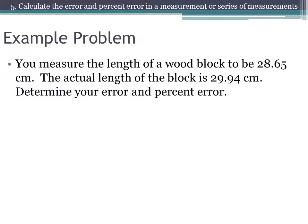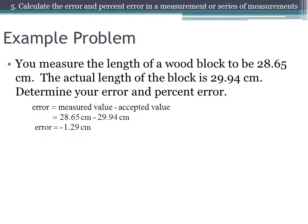Here is an example using these equations. You measured the length of a wood block to be 28.65 centimeters. The actual length is 29.94 centimeters, and you are asked to determine your error and percent error. To find error, we take the measured value minus the accepted value: 28.65 centimeters minus 29.94 centimeters gives you negative 1.29 centimeters. If your error is negative, that simply means you measured too low.